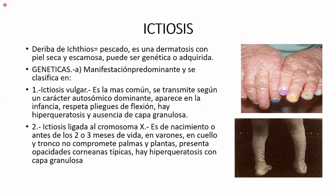El otro tipo es la ictiosis ligada al cromosoma X. También es de nacimiento o se nota antes de los dos o tres meses de vida. Se presenta en varones, en cuello y tronco, no compromete palmas y plantas. Se encuentran opacidades corneanas típicas; si ven la capa córnea del ojo opaca o color café con leche, pueden decir que es ictiosis ligada al cromosoma X.